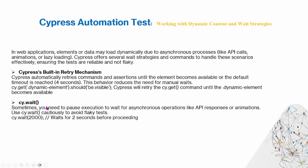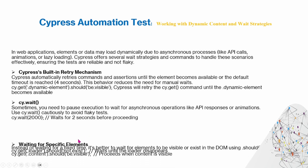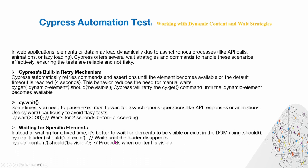You can also use cy.wait when you need to pause execution to wait for asynchronous operations like API responses or animations. You can use cy.wait to cautiously avoid flaky tests. This command takes milliseconds, so for example, waiting 2000ms means waiting for two seconds.